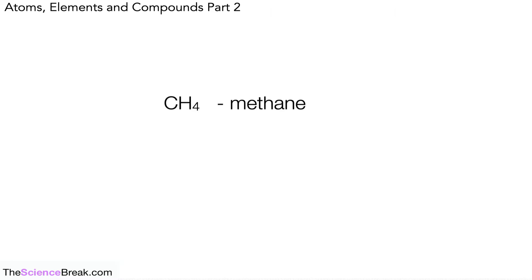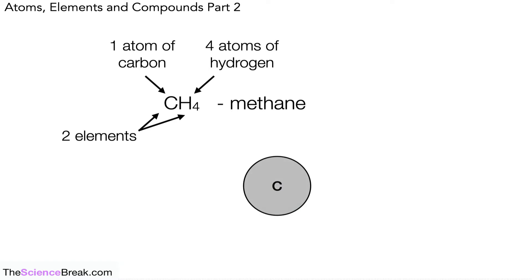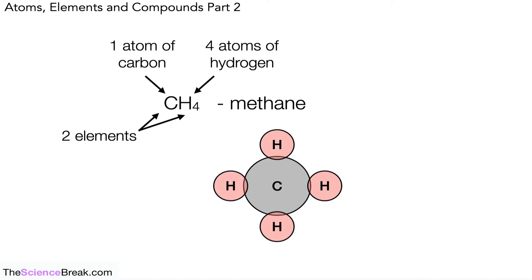This compound is methane, CH₄. We can gather a lot of information from this formula. There are two elements present — carbon and hydrogen. There is one atom of carbon, and the subscript four links to the hydrogen, meaning there are four atoms of hydrogen. If we look at the structure of methane, there is one carbon atom with four hydrogen atoms attached to it.